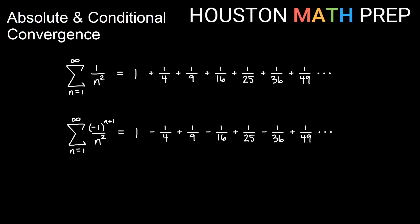Hey everyone, welcome back. Houston Math Prep here talking to you about two types of convergence for alternating series: absolute and conditional convergence.